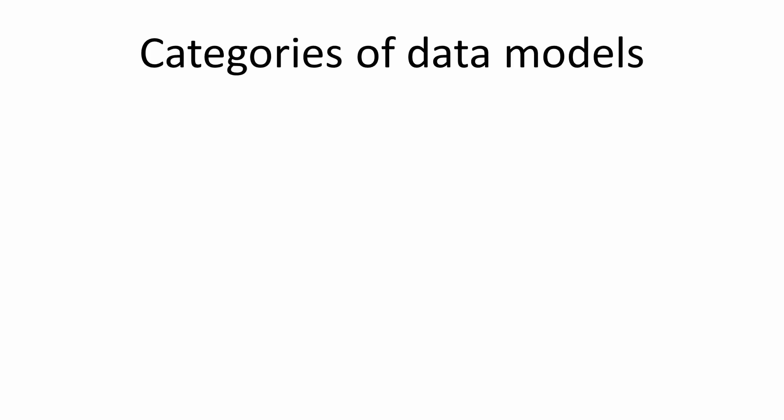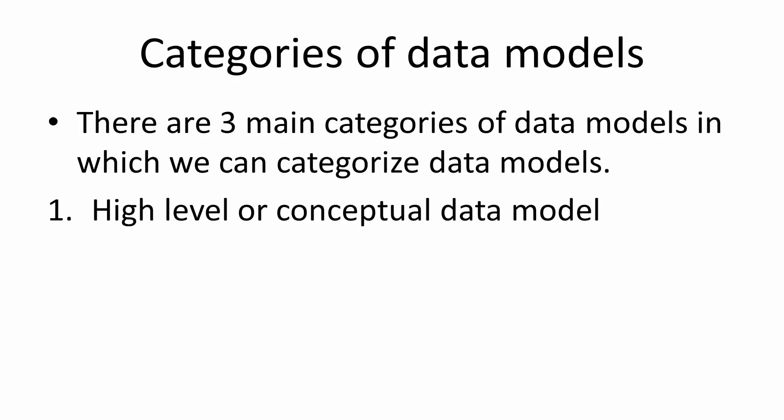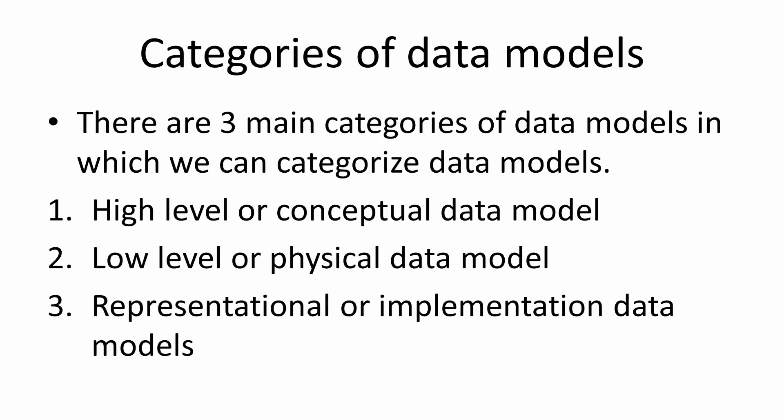I have explained all three categories in detail in a previous video, so I'll put the link in the description below. There are three main categories of data models: the first is called high level or conceptual data model, the second is called low level or physical data model, and the third is called representational or implementation data model. These are the categories, not the types.